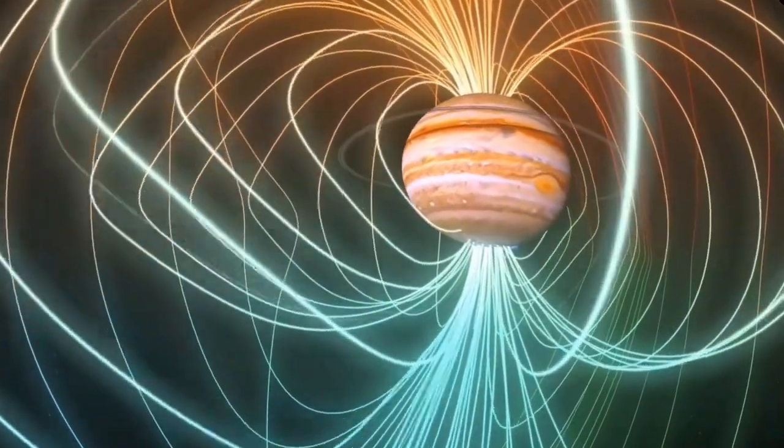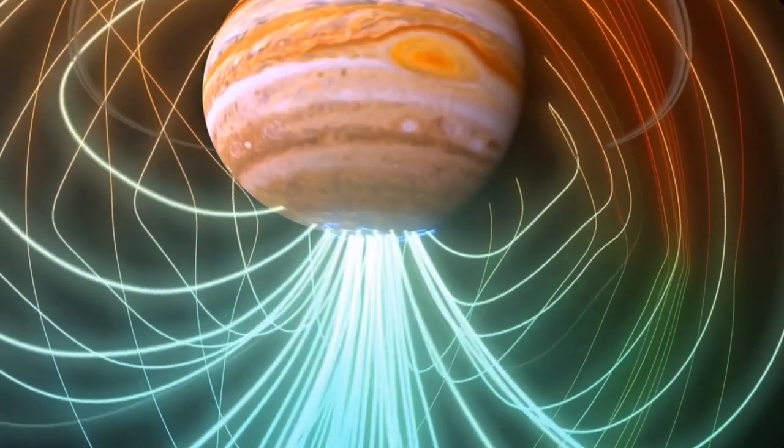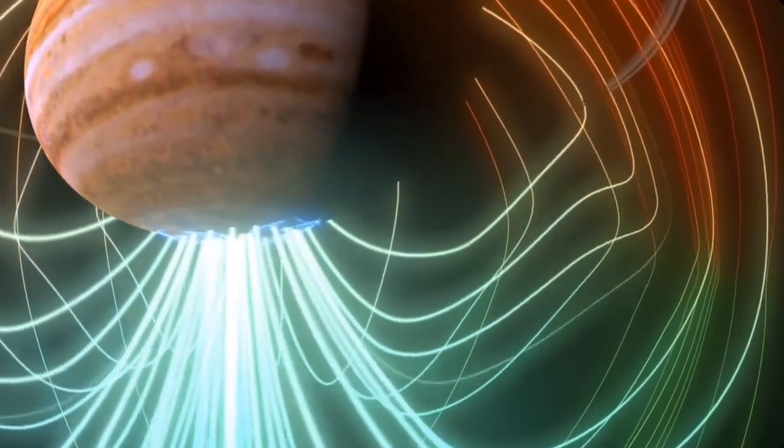Jupiter has metallic hydrogen flowing in its core, creating the dynamo to power a magnetosphere 20,000 times stronger than Earth's.